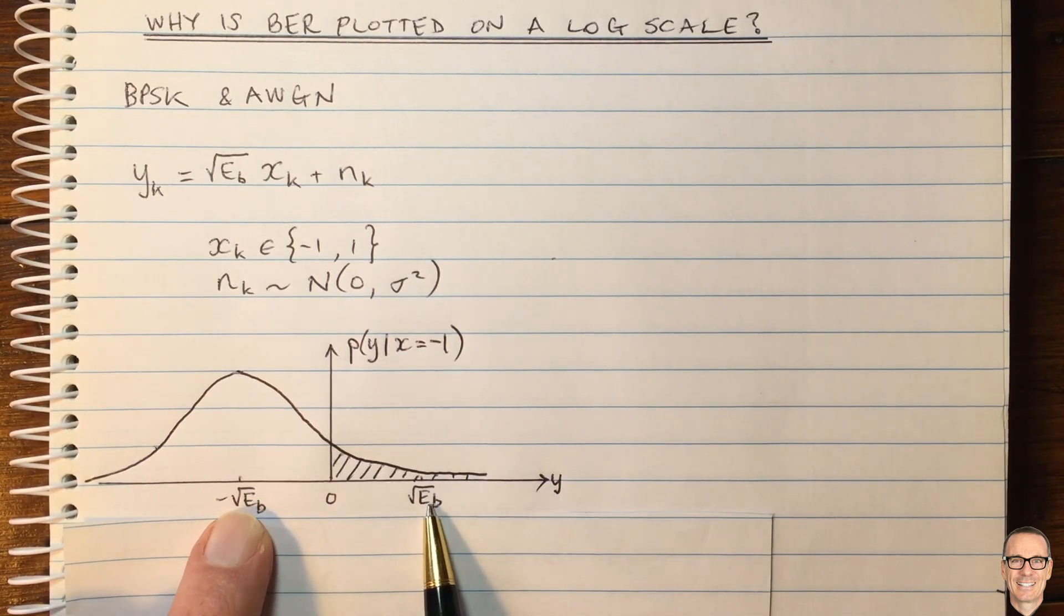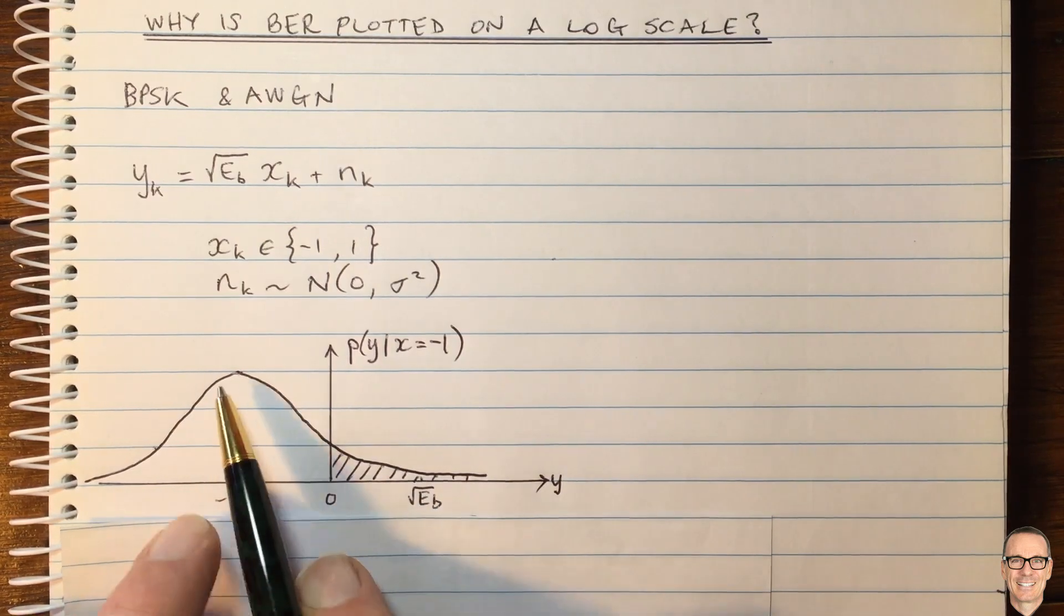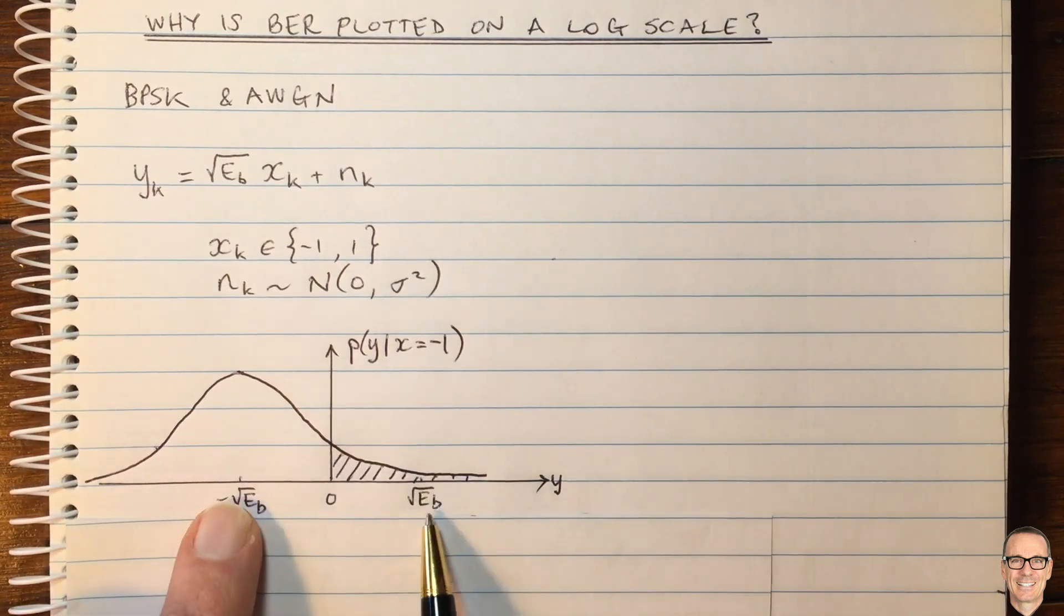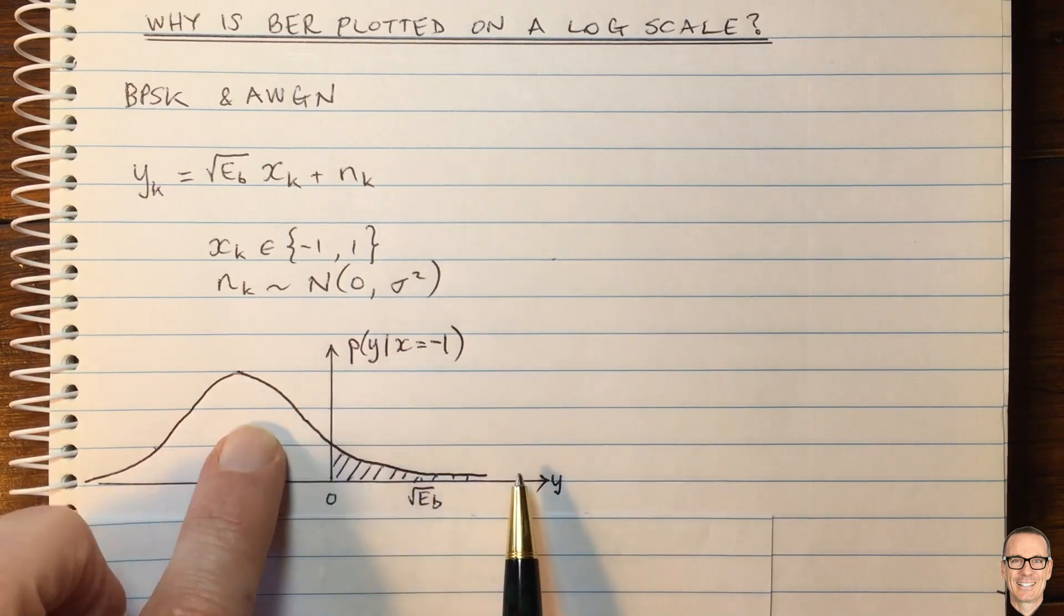So if we made the energies smaller, then the curve would be shifted to the right. If we make the energies bigger, it shifts to the left.